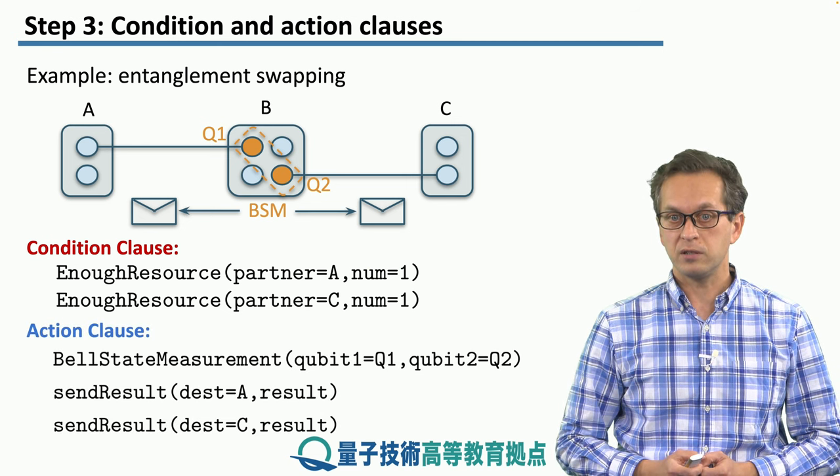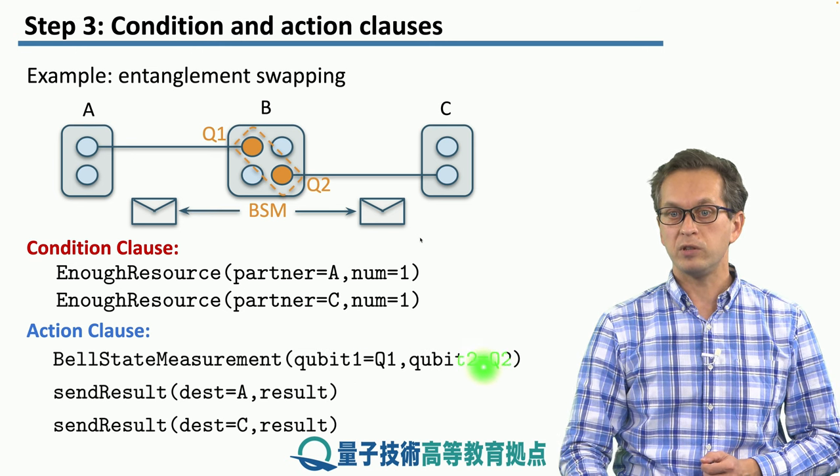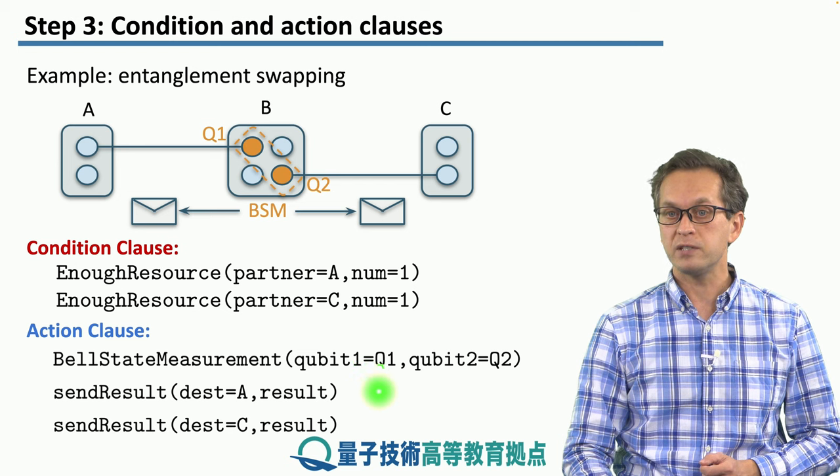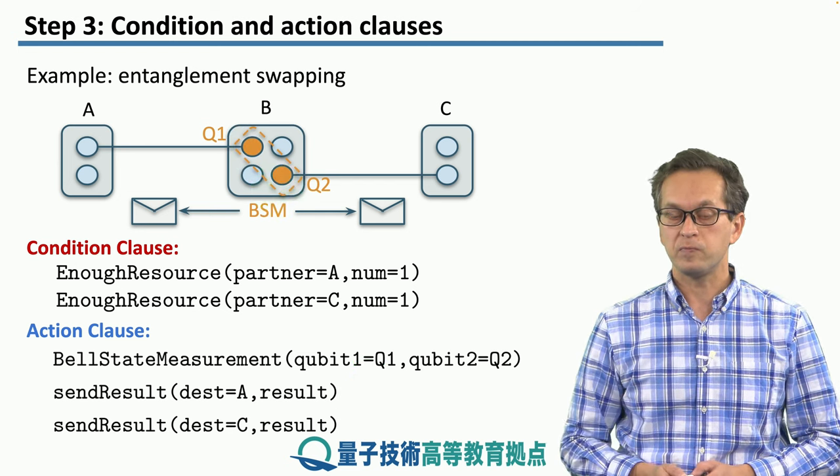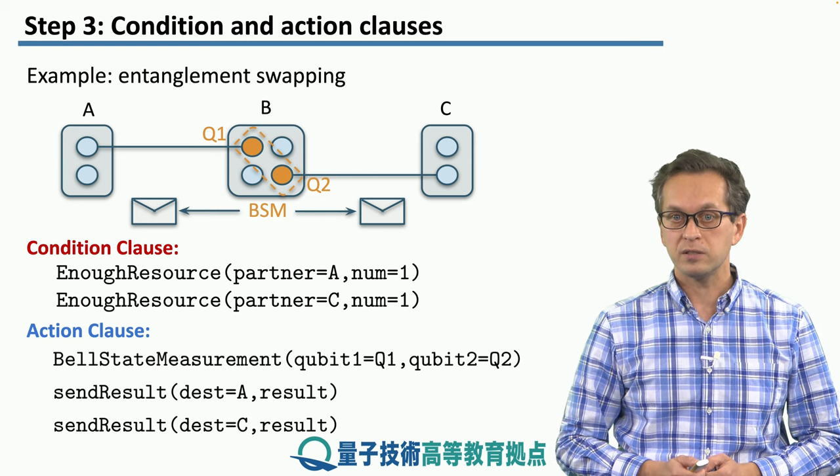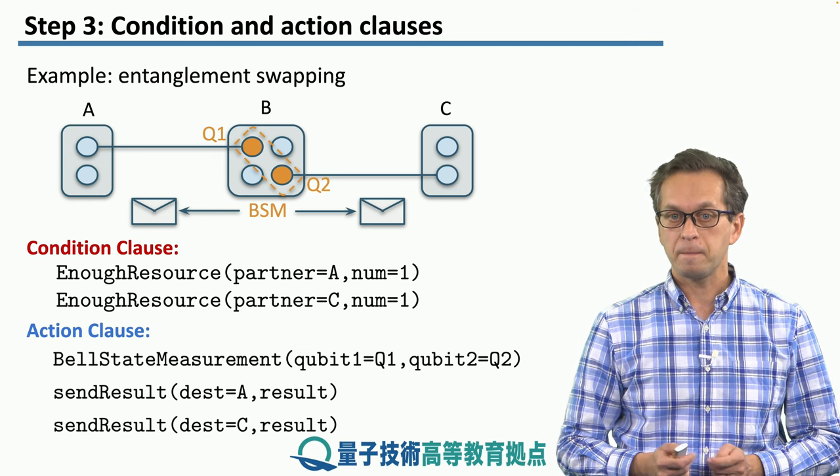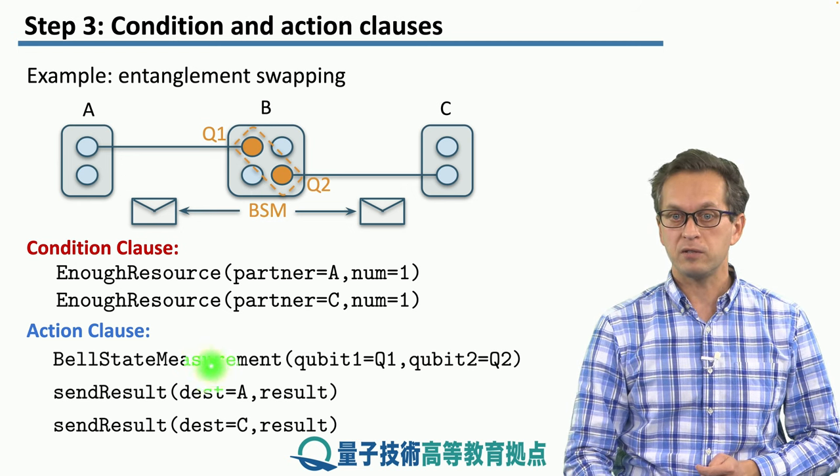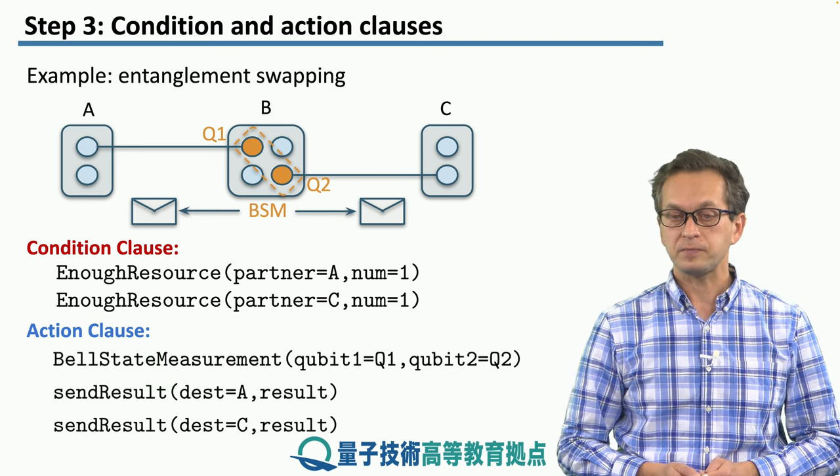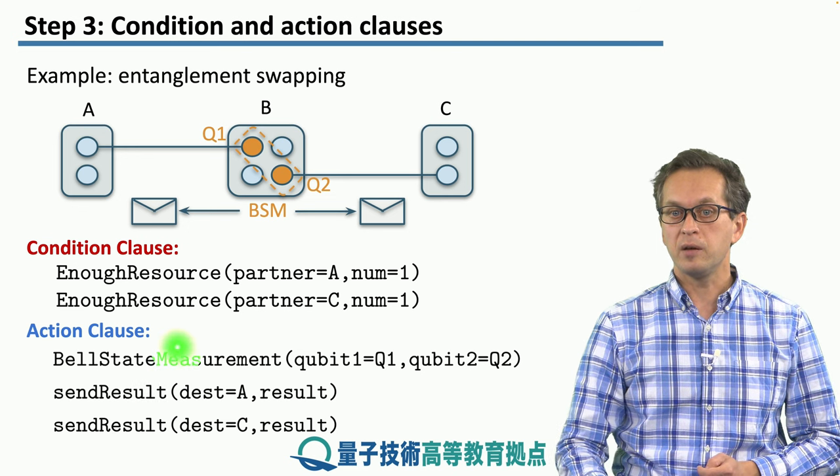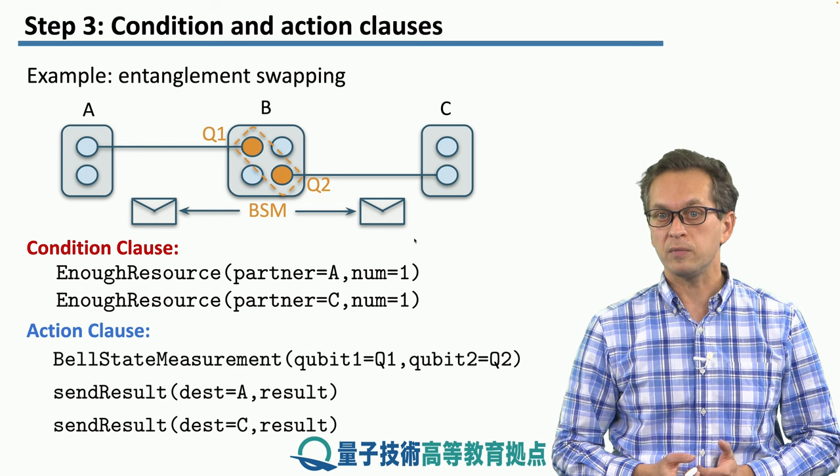In this case, it's bell state measurement at qubit 1 and qubit 2. Here, qubit 1 and qubit 2 are giving us the physical addresses of the qubits inside node B, q1 and q2. Once that is finished, and these qubits, qubit 1 and qubit 2, are measured in the bell state basis, node B needs to send the result to node A via this send result action. And also, the same needs to happen but with node C. And this concludes our rule for entanglement swapping.